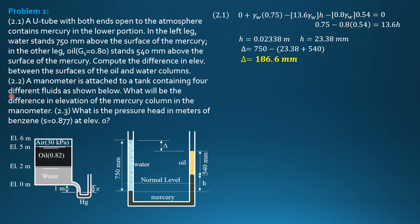We proceed to the second problem. A manometer is attached to a tank containing four different fluids as shown. Here is a fluid, two oil, water, then mercury. What will be the difference in elevation of the mercury column in the manometer? So this difference is denoted by Z here, so let's find Z.